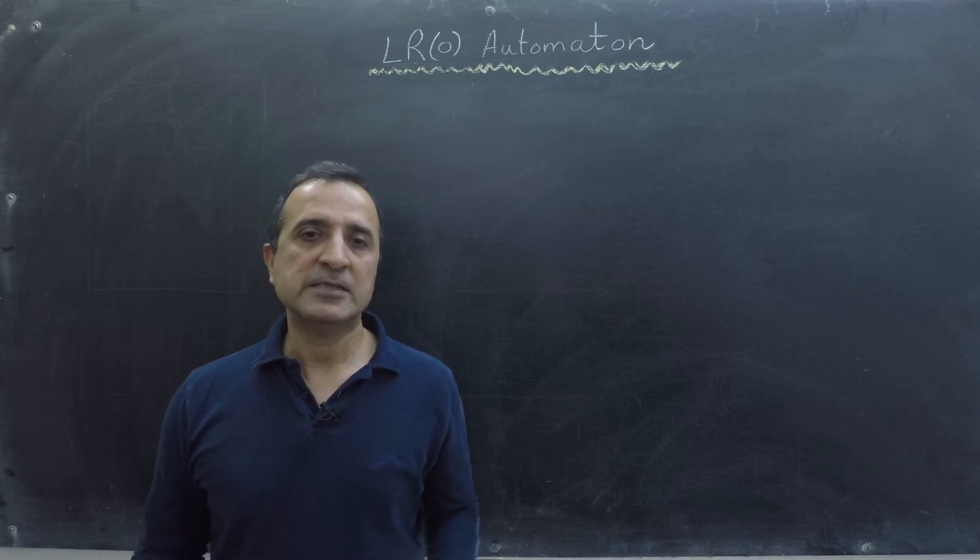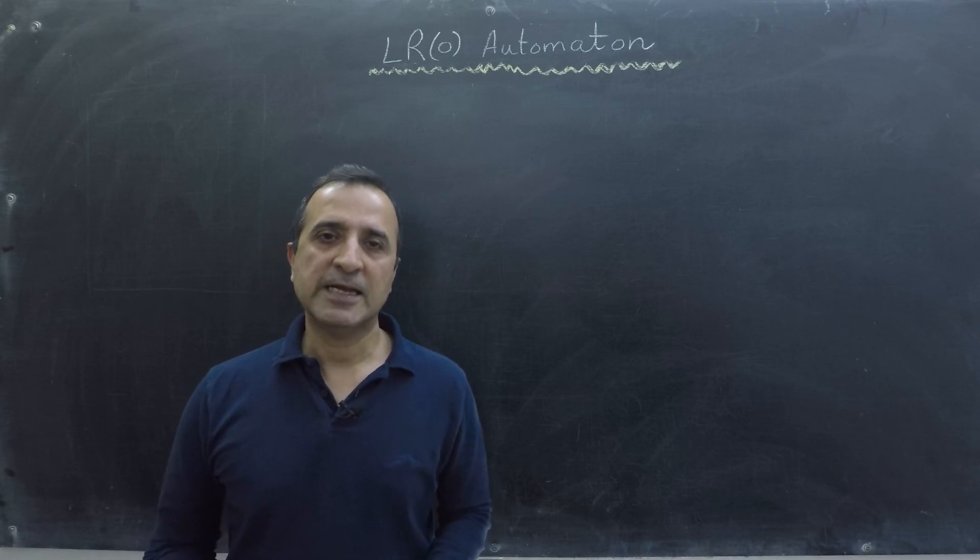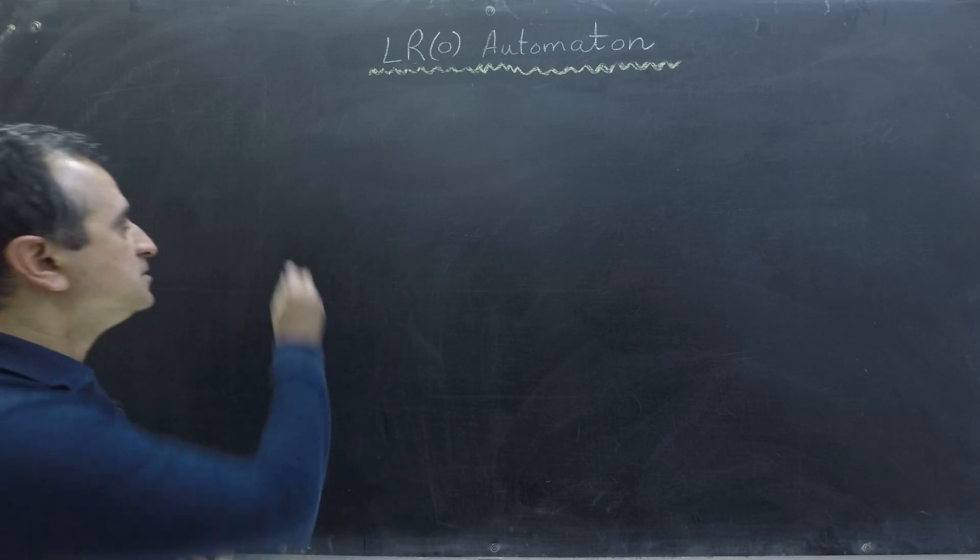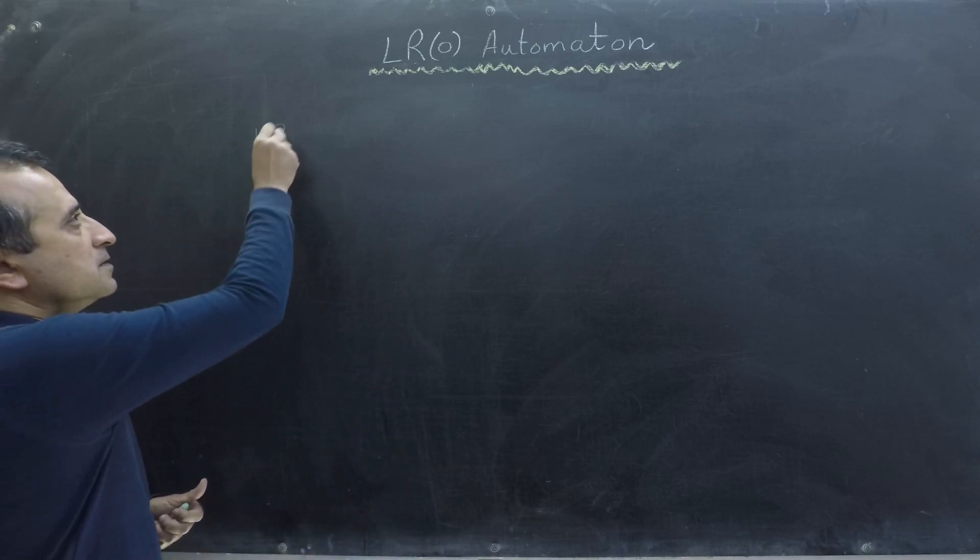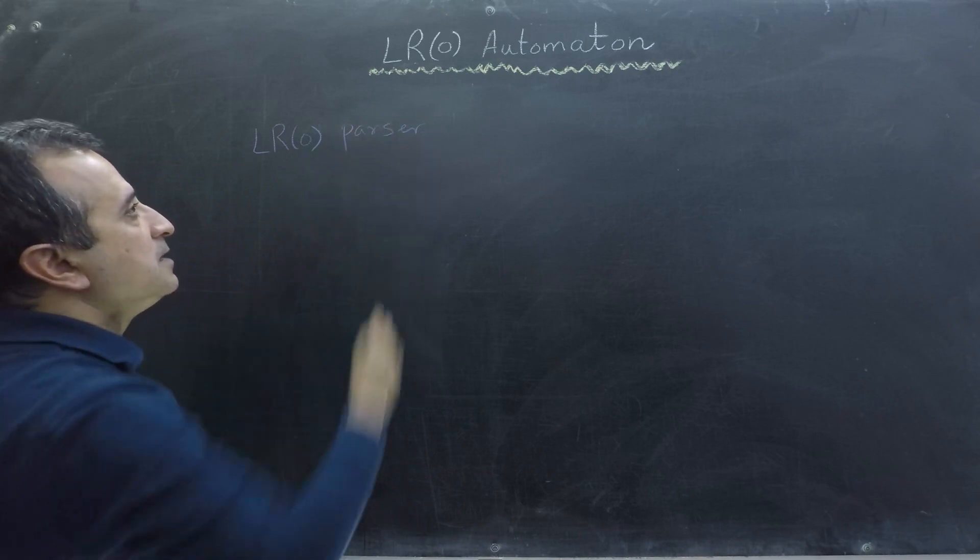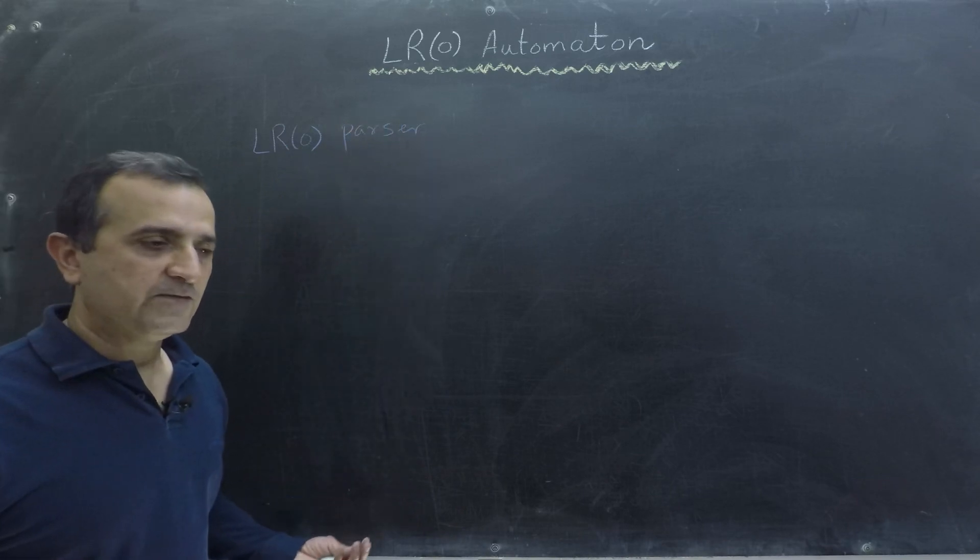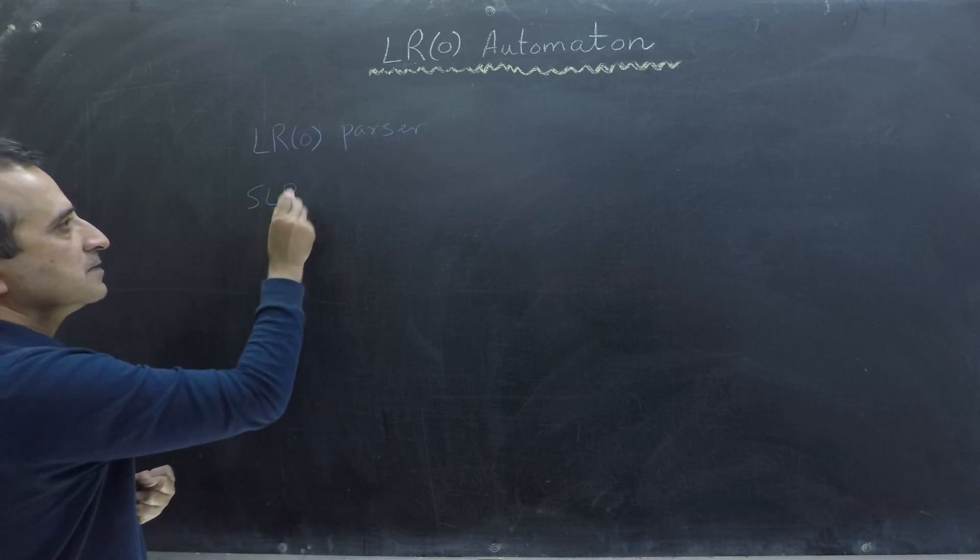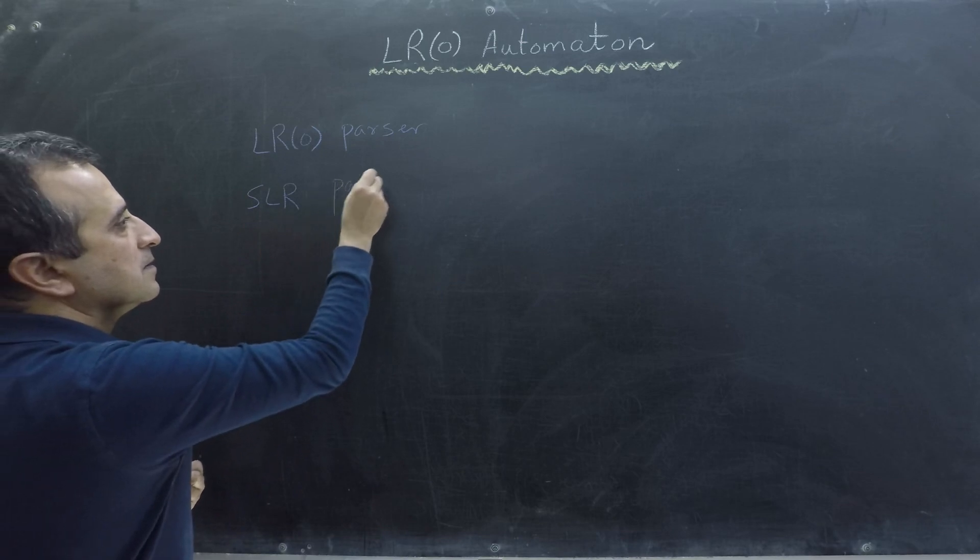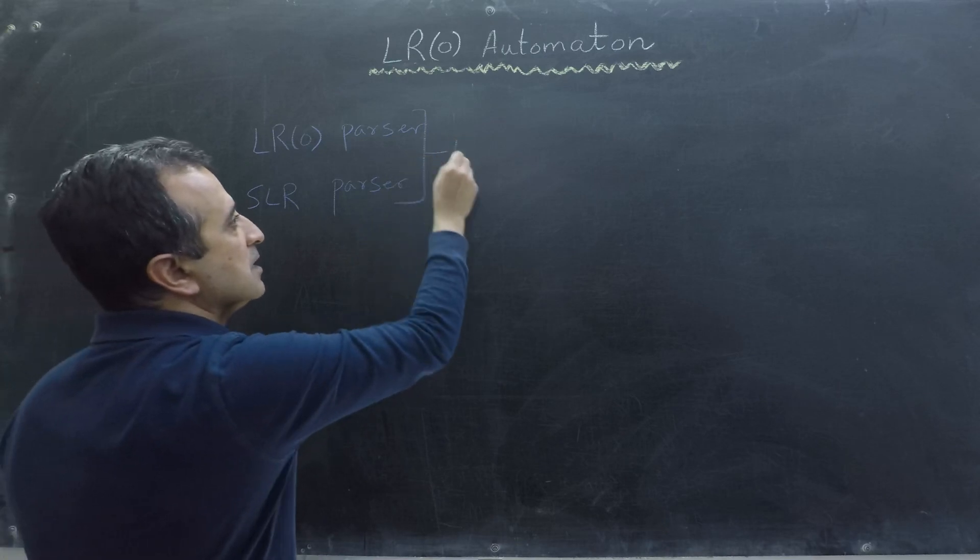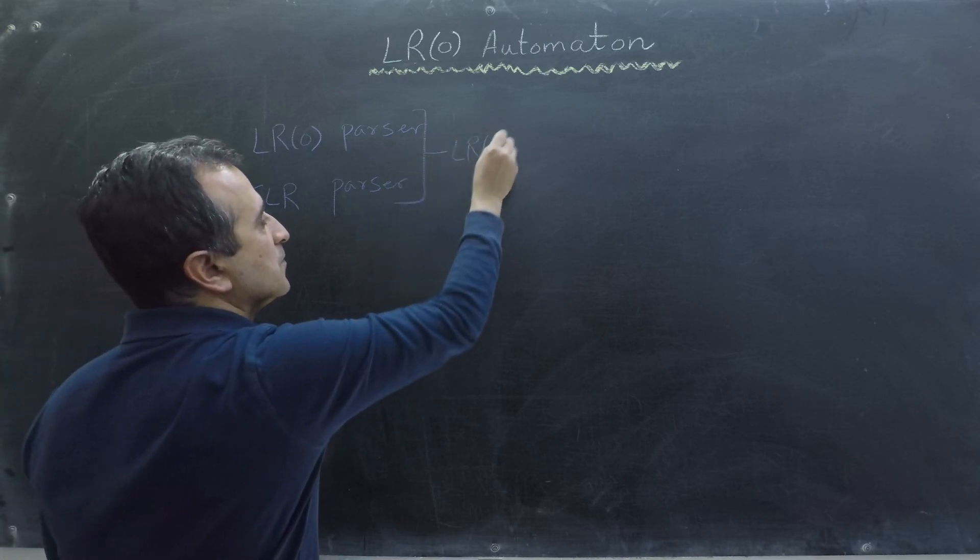LR0 DFA is important because it is used by two different parsers. It is used by LR0 parser and LR0 DFA is also used by SLR parser. So both of those parsers use LR0 DFA.